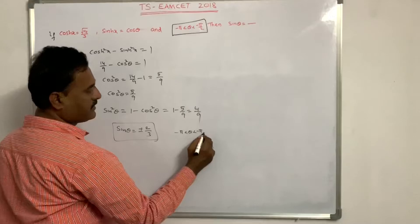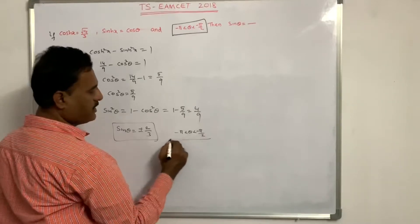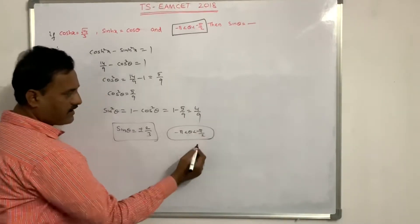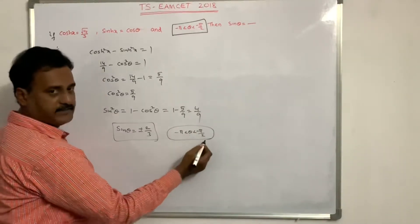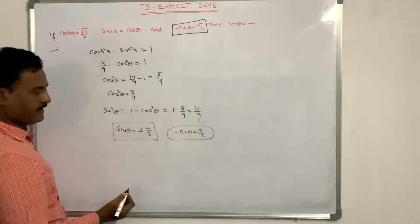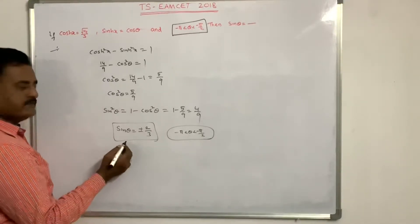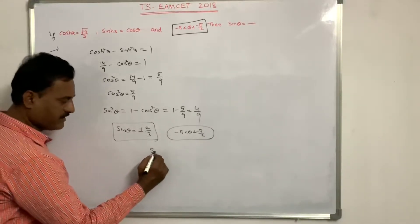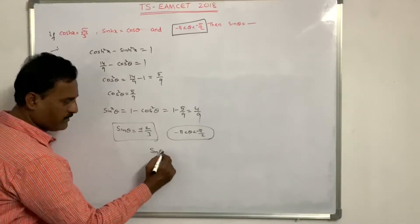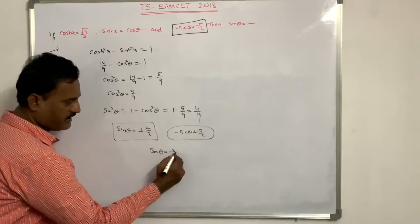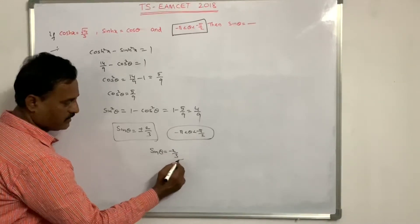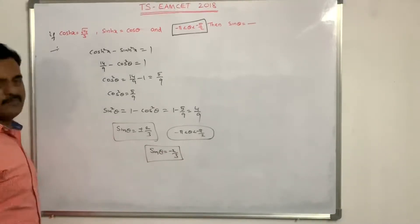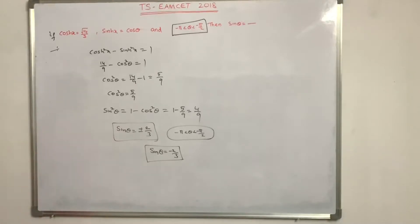In the third quadrant, sinθ is negative. Therefore sinθ = −2/3.